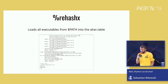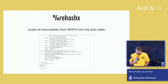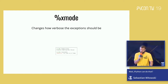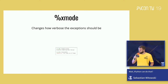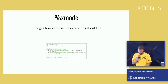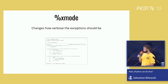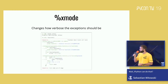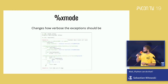IPython has four different settings for how verbose exceptions should be, and you can switch between them with the `xmode` magic function. You can select the lowest amount of information, a more verbose one, even more verbose — this is the default — and the most verbose, which also prints local and global variables for each level of the stack trace.